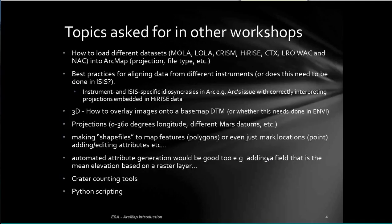The first common question is how do you load all this data — Lola, Chrism, HiRISE, CTX, WAC? What are the best practices for lining up these instruments? What are some of the ICIS-specific idiosyncrasies? ArcMap has built-in support for some PDS and ICIS data, and probably in about a year, Vicar directly. It reads in the projection, node data, number of bands — 32-bit, 16-bit, doesn't matter. The problem is ICIS supports five node data values, but ArcMap supports only one, so you have to understand how to map that.